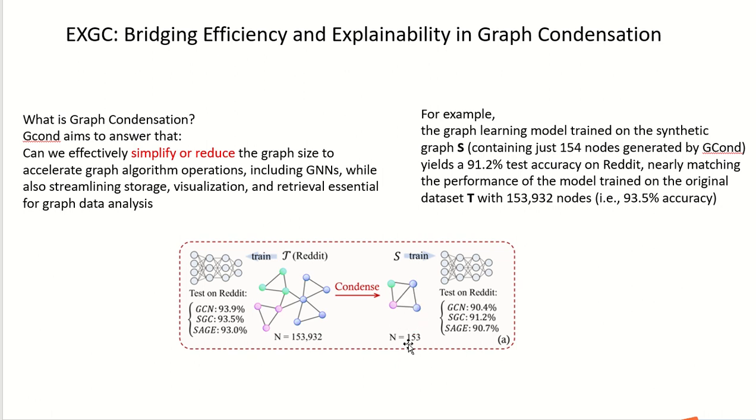The graph S generated by Graph Condensation contains only 153 nodes. But trained on this small graph,